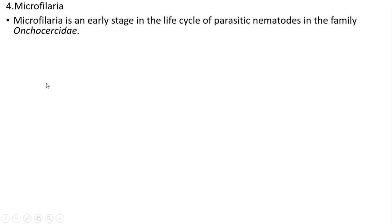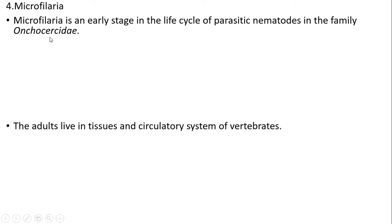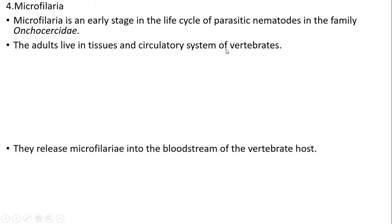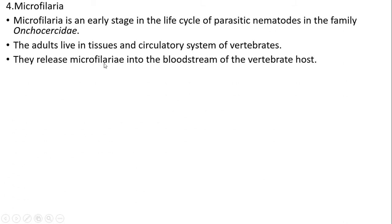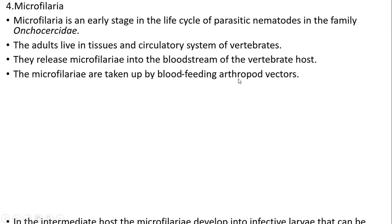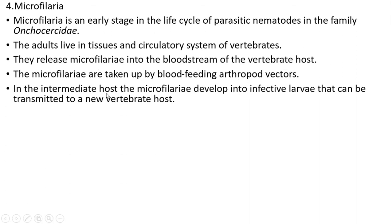The fourth question is on Microfilaria. Microfilaria is an early stage in the life cycle of parasitic nematodes in the family Onchocercidae. The adults live in tissues and the circulatory system of vertebrates and release microfilariae into the bloodstream of the vertebrate host. Microfilariae are taken up by blood-feeding arthropod vectors — the intermediate host — where they develop into infective larvae that can be transmitted to a new vertebrate host.